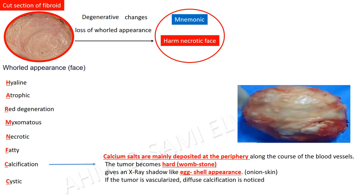Calcified degeneration: calcium salts are mainly deposited at the periphery along the course of blood vessels. The tumor becomes hard. On X-ray it gives an eggshell appearance shadow. If the tumor is extensively avascularized, diffuse calcification is noticed.